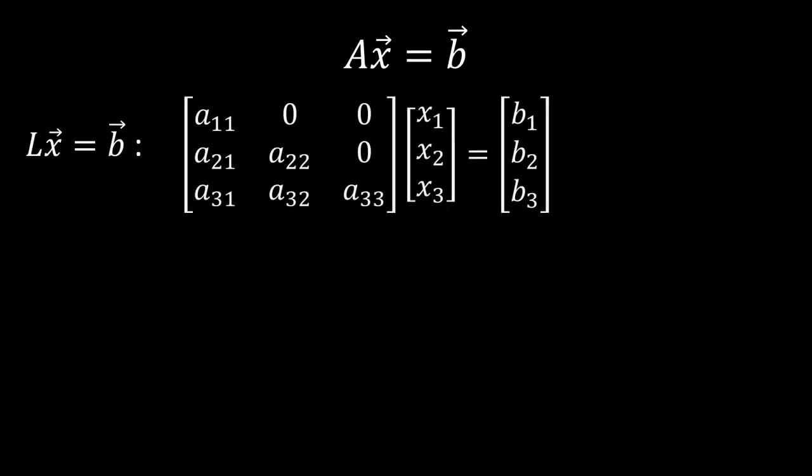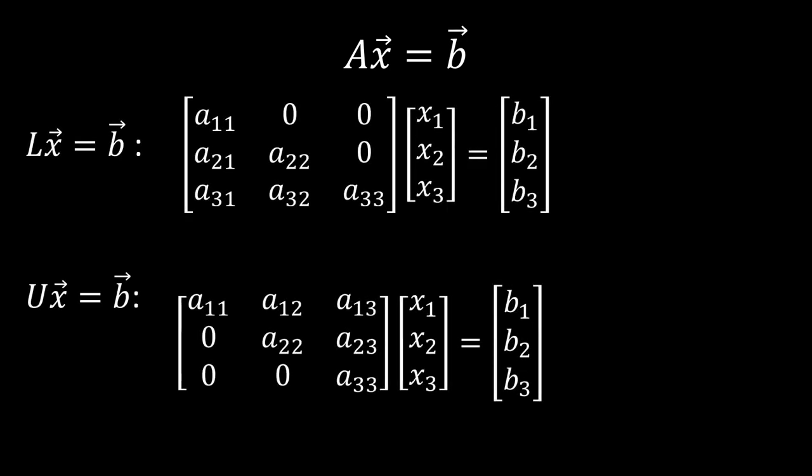Previously, we discussed the linear system, and we showed that if our A matrix is in a lower or upper configuration, it's much easier and quicker for us to solve for the unknowns of the system not only by hand, but also computationally.